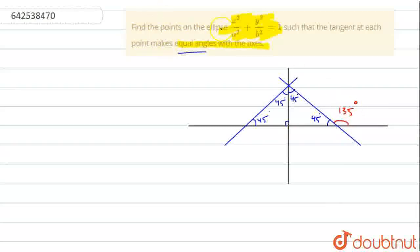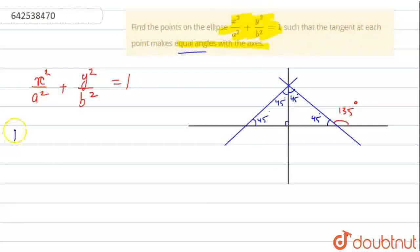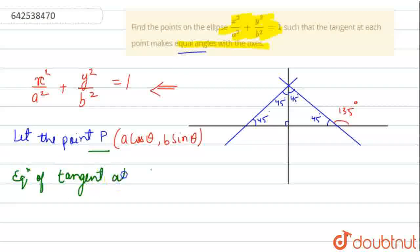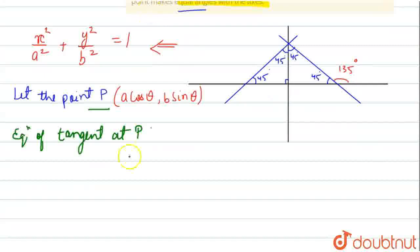The ellipse given is x²/a² + y²/b² = 1, and the tangent with the positive x-axis makes an angle of 135 degrees in the second case. We need to find the points on the ellipse. Let the point P have coordinates (a cosθ, b sinθ), since it lies on the ellipse. The equation of the tangent at point P is: x/a · cosθ + y/b · sinθ = 1.